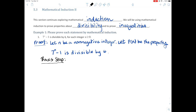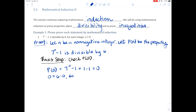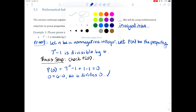For our basis step, we need to check P(0) and see if it is true. When we evaluate this property at 0, we plug in 0 wherever we see n: 7 to the 0 is 1, and 1 minus 1 equals 0. What does it mean to be divisible by 6? That number needs to be a multiple of 6. Zero equals 6 times 0, so 6 divides 0. Our basis step is true.